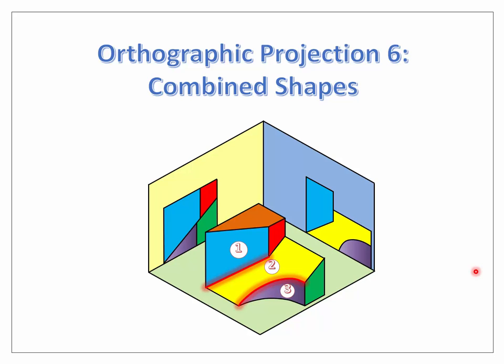Hello and welcome back to our webcast series on the principles of orthographic projection. In this video we're going to look at what to do if you have an object which is made up of the interaction between different shapes. This is an area which can cause students starting off a bit of difficulty when trying to work out the missing information from the questions, so hopefully this video is going to shed some light on how to solve these questions.